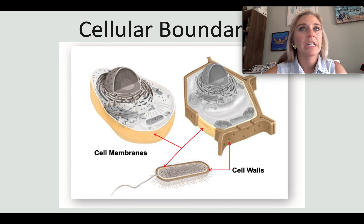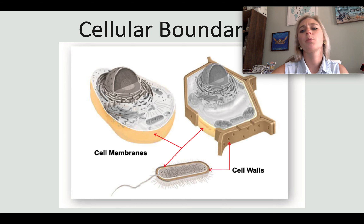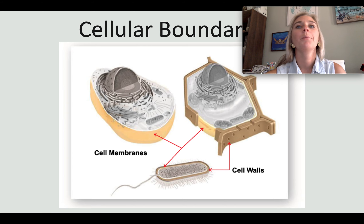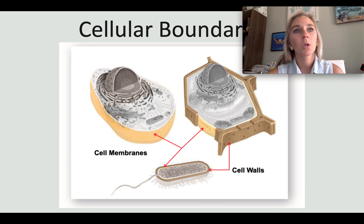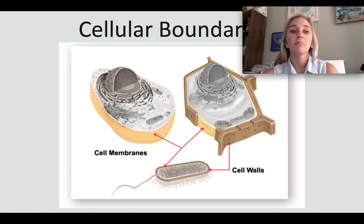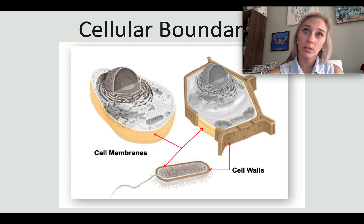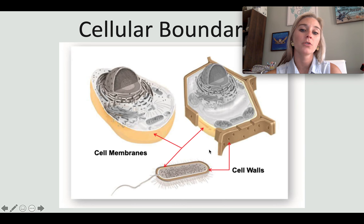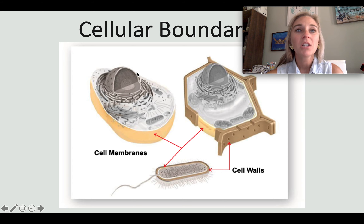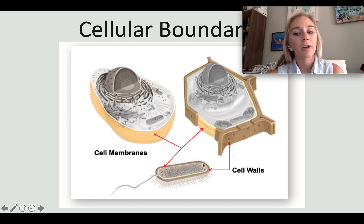When thinking about cellular boundaries, imagine a property owner putting up a fence. The fence creates a barrier — it keeps people and animals in the yard and also keeps them out. You enter and exit through a gate. Similarly, the cell's boundary is meant to contain the inside of the cell but also to keep things out that don't need to go in. Plant cells and prokaryotes have a cell wall, while animal cells only have a cell membrane.